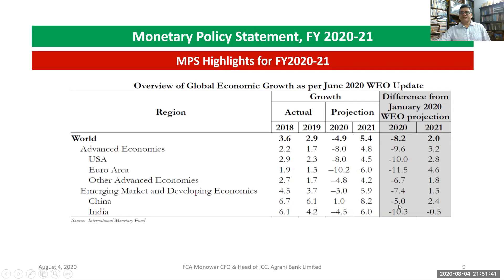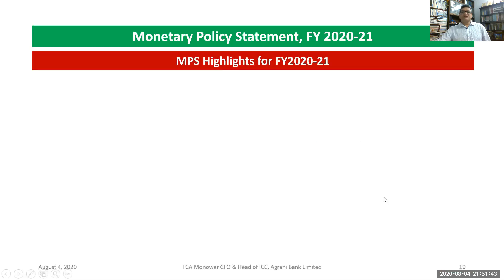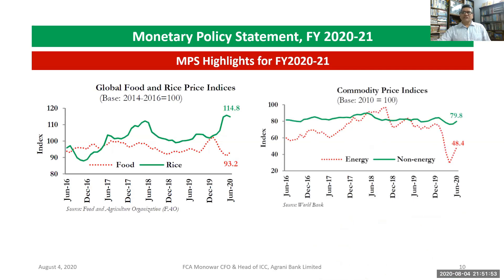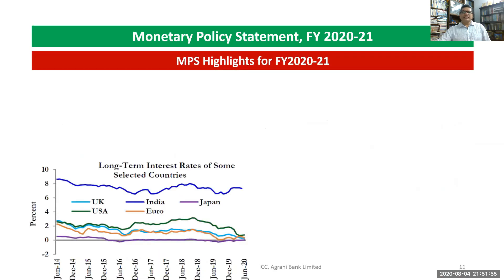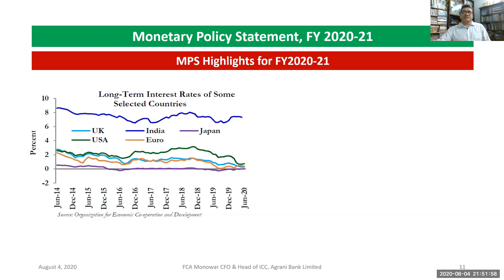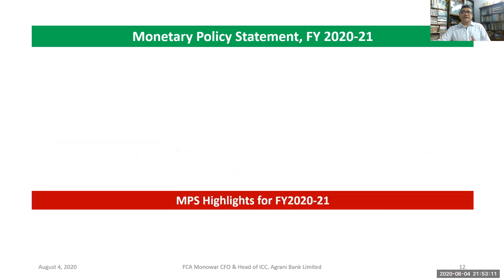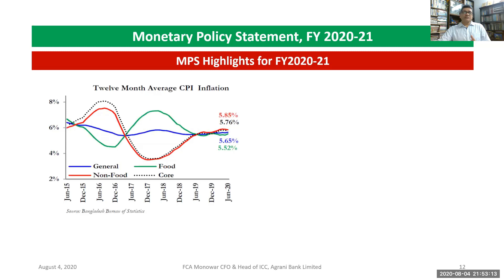The global food price indicators, rice and food commodity price indicators, and long-term interest rates of selected countries are also presented. Looking at this chart, the line for India is highlighted. Policy rates of selected countries including China, the US, UK, Japan, and European countries are also shown. These are part of the monetary policy highlights in the MPS of 2021.